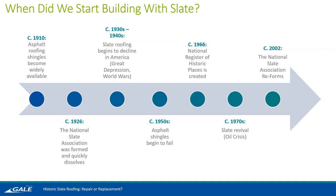In the 1950s, some of those first generations of asphalt shingles began to fail, and people realized slate and asphalt shingles are not really a one-to-one replacement. With asphalt shingles, you're lucky to get around 30 years out of them, whereas with slate, if properly installed, you'll get something from 75 to 100 years or more. In 1966, the National Register of Historic Places was created, putting an emphasis on preserving historic buildings. Then in the 1970s, we see a revival of slate due to the oil crisis — asphalt shingles are an oil-based product, so as they became less available and more expensive, people turned back to slate.